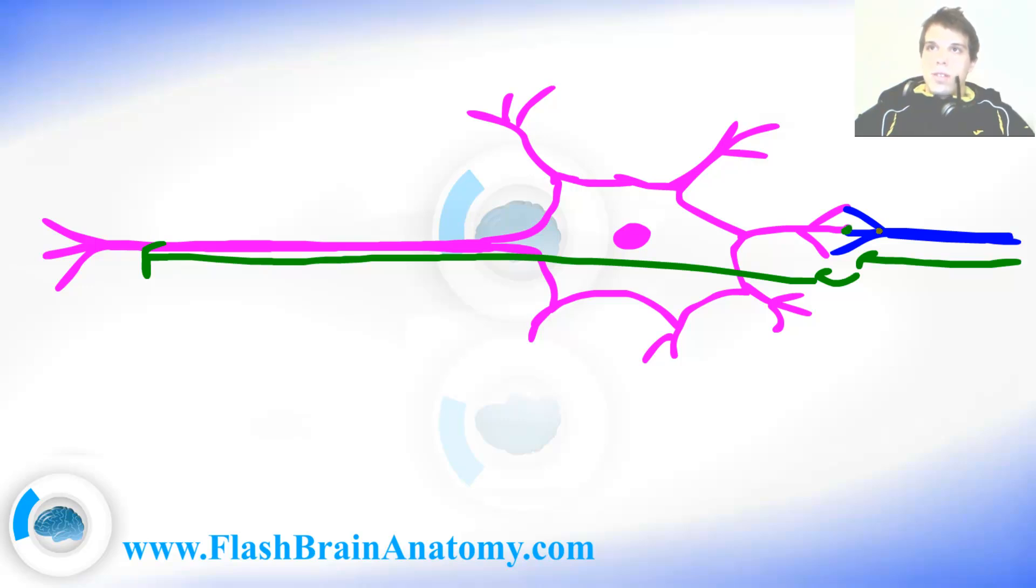Now those places over here, those connections between axons and neurons are called the synapses. And I have drawn that more in details to show you how it looks like and how it functions.